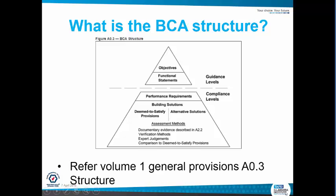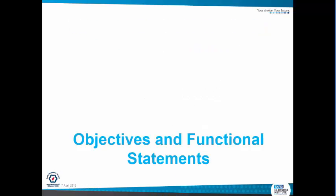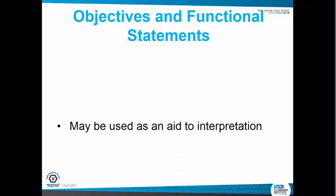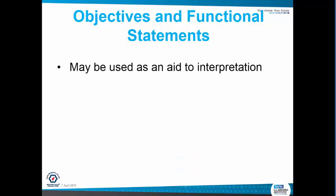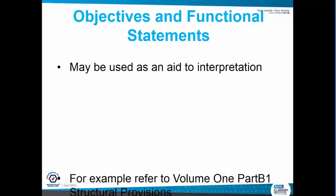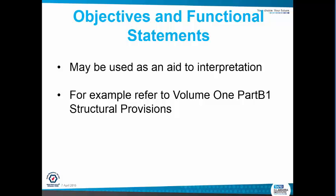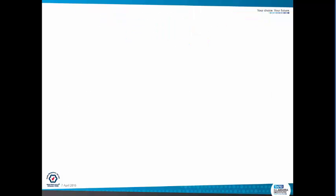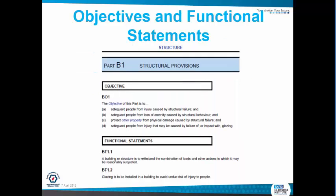You can get that from Volume 1 of your general provisions — that's where I got that graph. The objectives and the functional statements may be used as an aid to interpretation. For example, refer to Volume 1 Part B1 for the structural provisions — and there's a snapshot there.